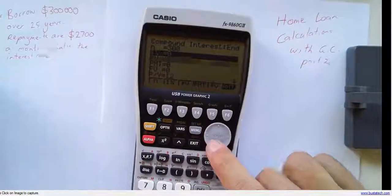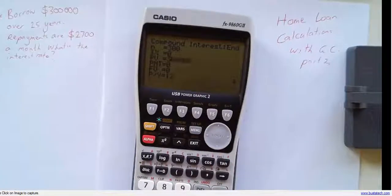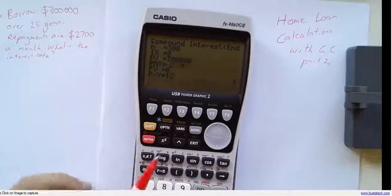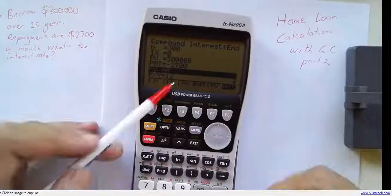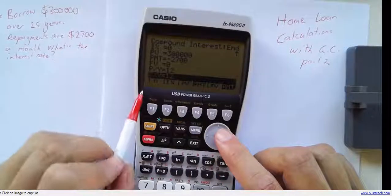So 25 years times 12, that's 300 compounding periods. We don't know the interest rate, but we know we're borrowing $300,000. And we know that the payment is minus $2,700. Negative because it's coming out of our pocket.